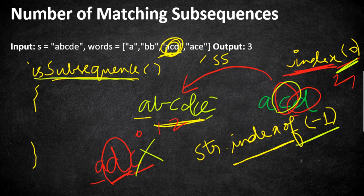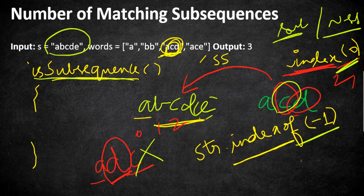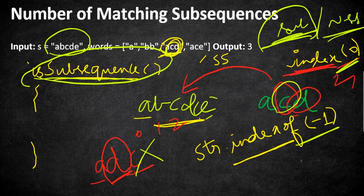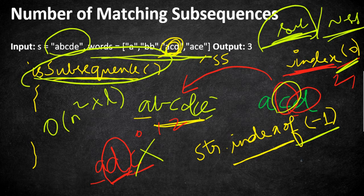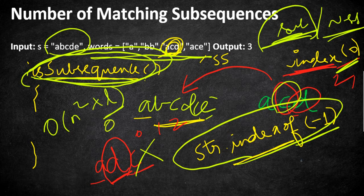Additionally, we maintain two sets: one called 'subsequence' and another called 'not subsequence'. The subsequence set holds words already confirmed as subsequences of s, and the not-subsequence set holds words confirmed as not subsequences. Whenever we encounter a word again, we skip the function call and directly use the cached result. Overall the time complexity is O(|words| · |word_length| · |s|) because we iterate words once, pass them to isSubsequence which iterates each character, and indexOf takes O(|s|) time.